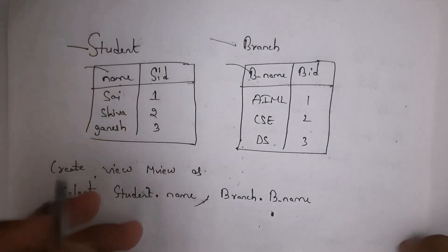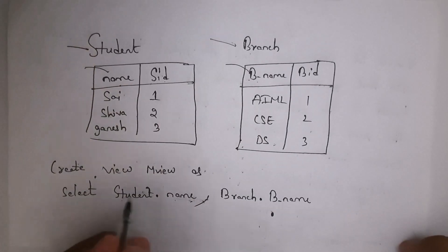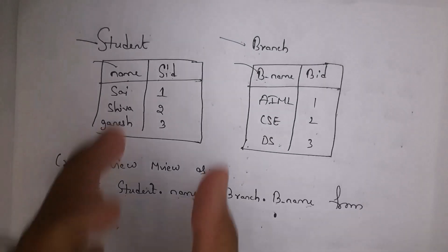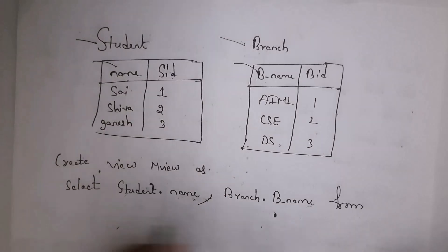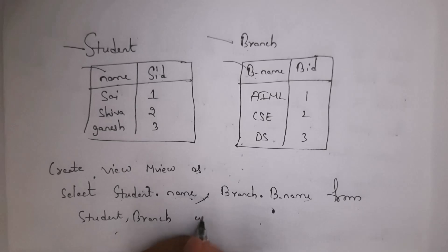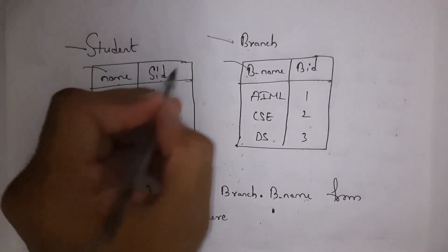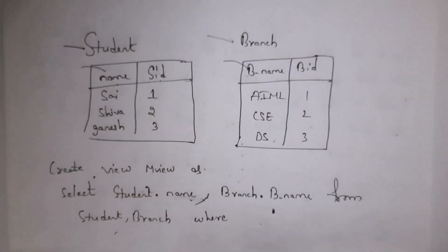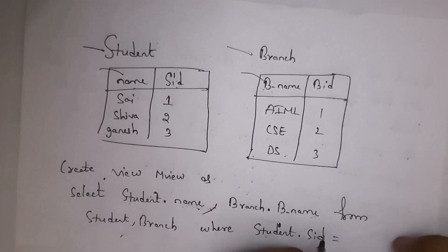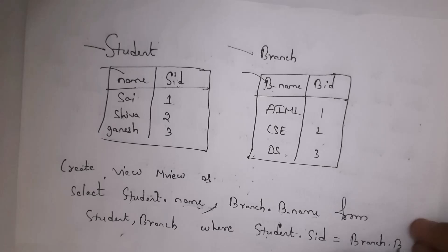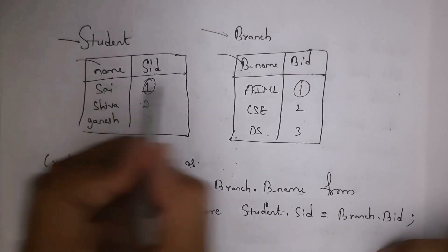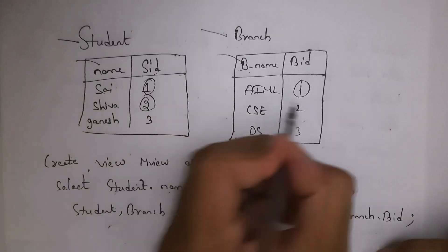I selected two columns from two tables. Now write the condition: WHERE student.SID = branch.BID, then add a semicolon. Here there is a match: 1 equals 1, so it will select Sai and AML. There is a match 2 equals 2, so it will select Shiva and CSE. There is a match 3 equals 3, so it will select Ganesh and DS.